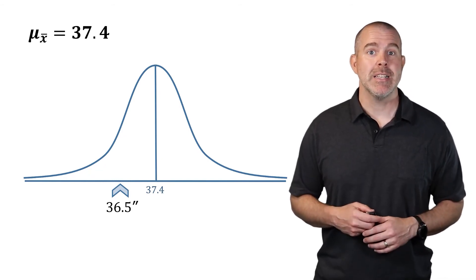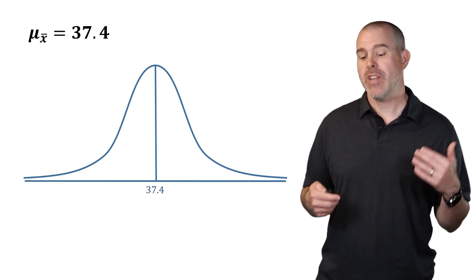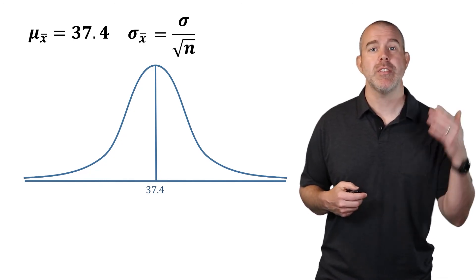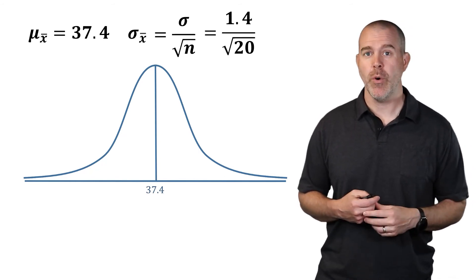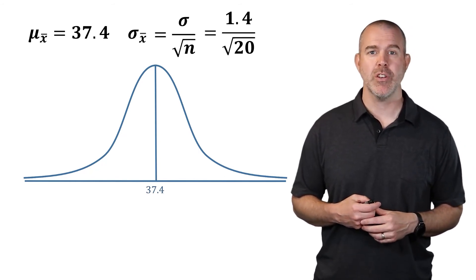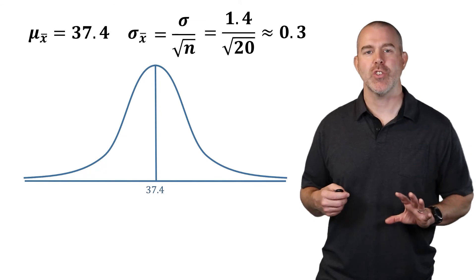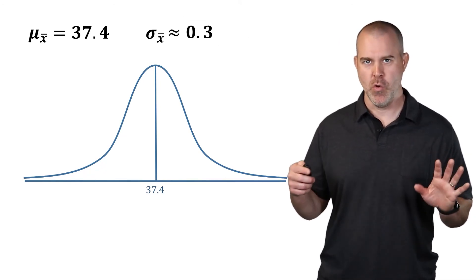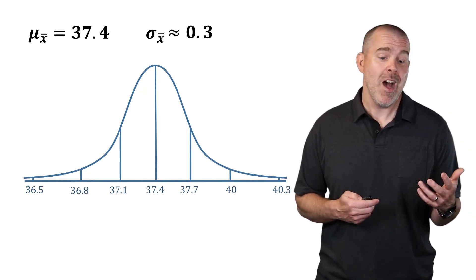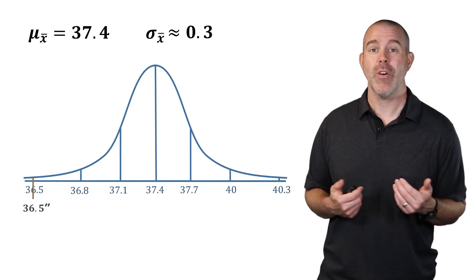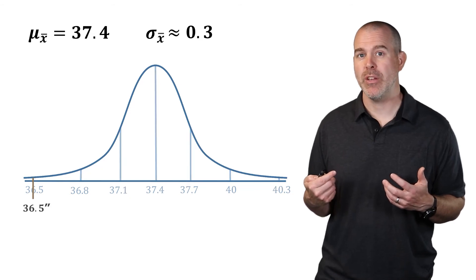The central limit theorem says if your original variable is normally distributed, which heights are, then your standard deviation of your sample means should be the standard deviation of the population divided by the square root of the sample size. So this would be 1.4, that was our population standard deviation, over the square root of 20, which is about 3 tenths. I'm rounding significantly here just so I can do a quick graph on the normal distribution curve. So using 3 tenths, we have these values here. So now we know our 36.5 is actually way over on the left.